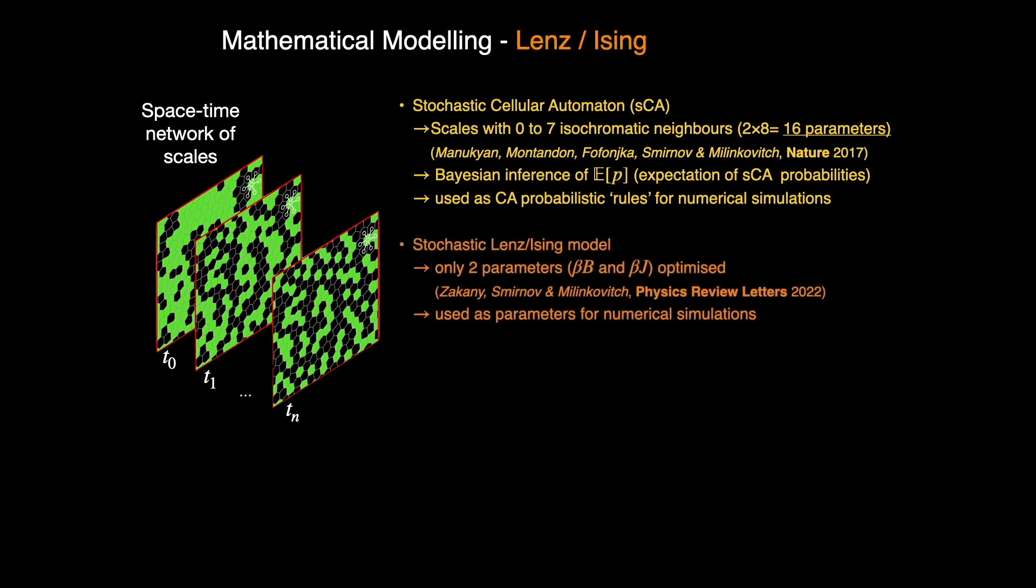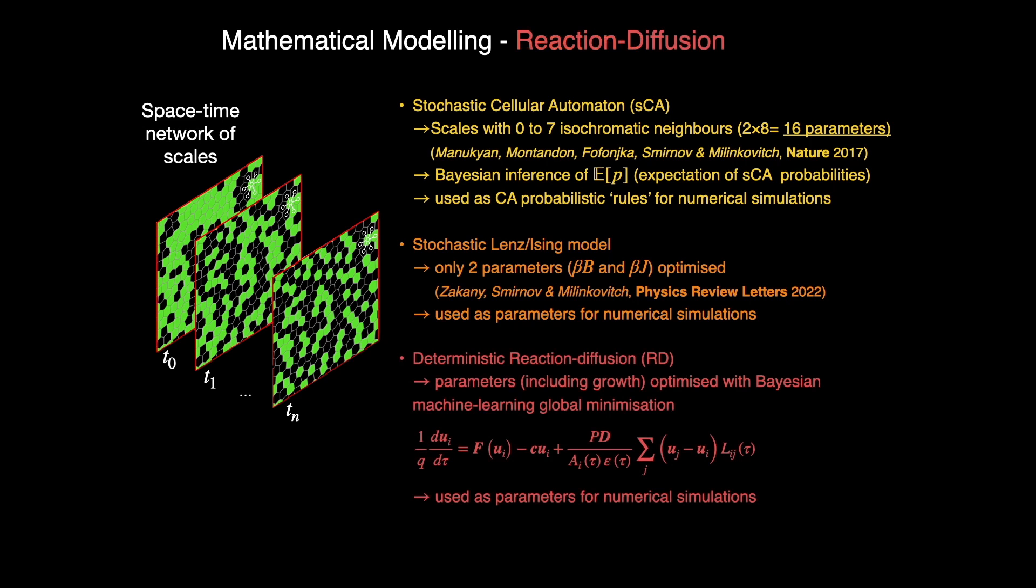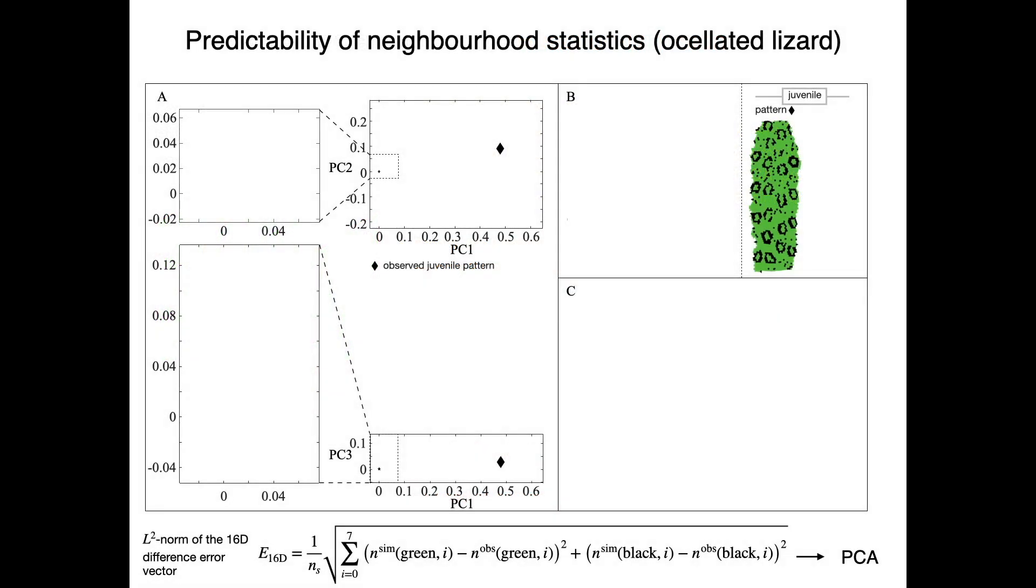In the stochastic CA, in the Lenz-Ising, which is another stochastic model, and in the RD model. We optimize parameters by minimizing the error between simulated and observed patterns.